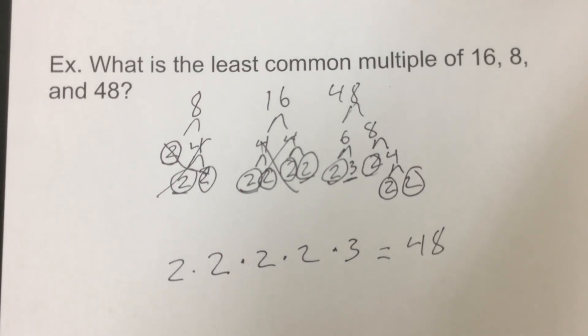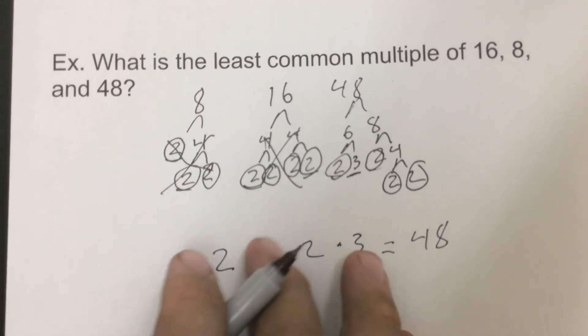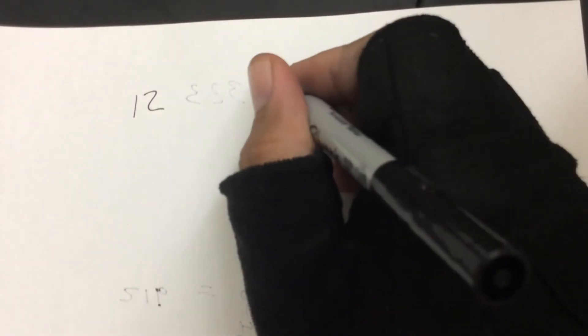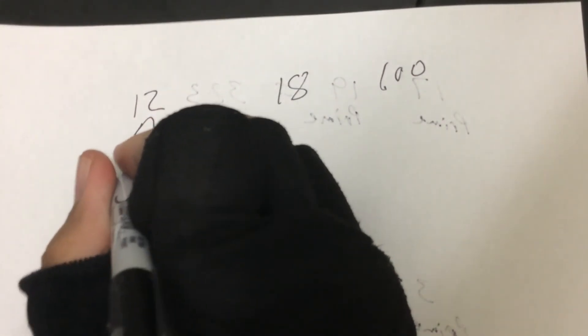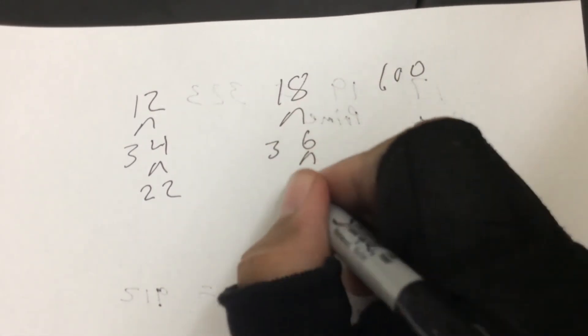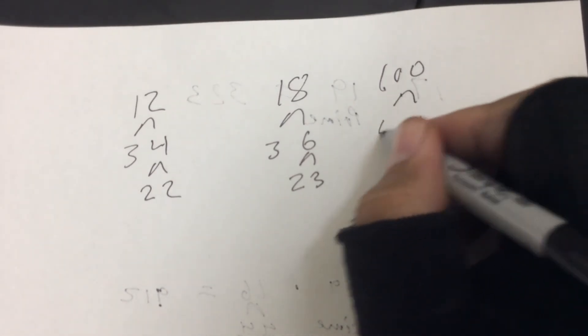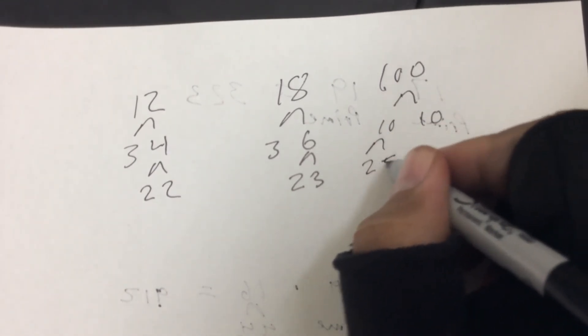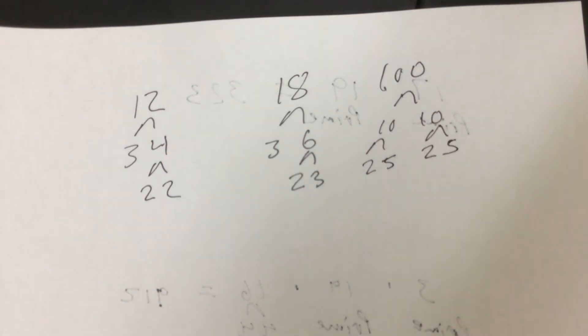Now this was an extra one that I did in class that I'm just going to do on the backside here. So this one's not in the notes, but an extra one I want to do just to show something. So if we did 12, 18, and 100. So 12 would break down to 3 and 4, which go to 2 and 2. 18 could go to 3 and 6, which go to 2 and 3. 100 would go to 10 and 10, which goes to 2 and 5. And we're completely factored out.